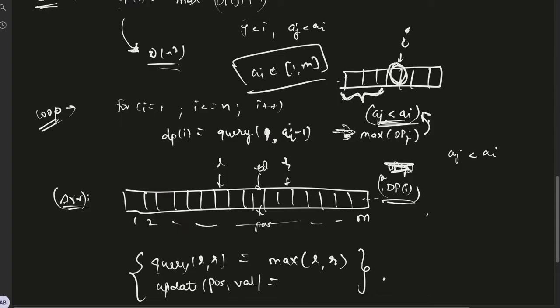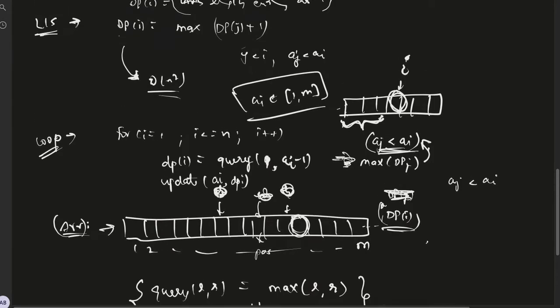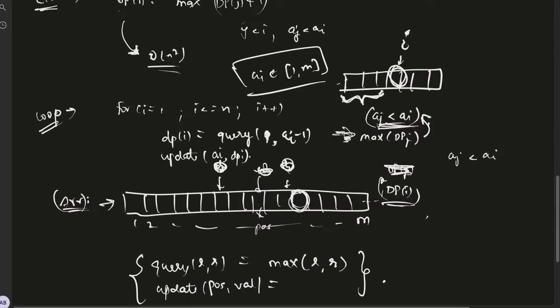And once we have dp[i], we can directly do update. We want to update a[i] in this array, whatever index in this array a[i] represents, we want to update that to dp[i]. This is the idea.